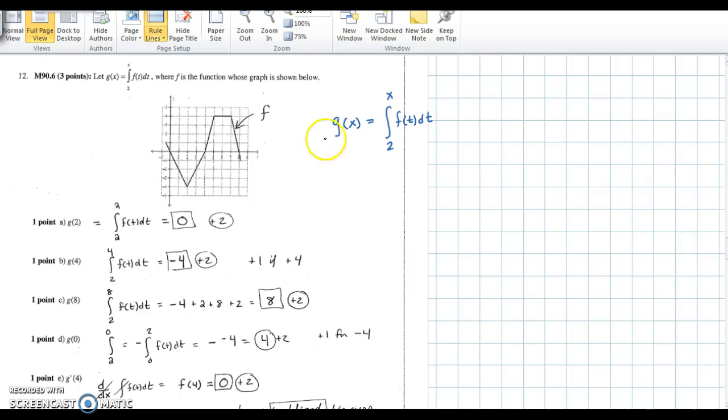In the first problem, you're asked to find g of 2, and g of x is defined as the integral from 2 to x of f of t dt. We'll recognize the integral means area under curve, so we're looking for the area from 2 to 2. Well, since there's really no base to that area, the answer is 0.